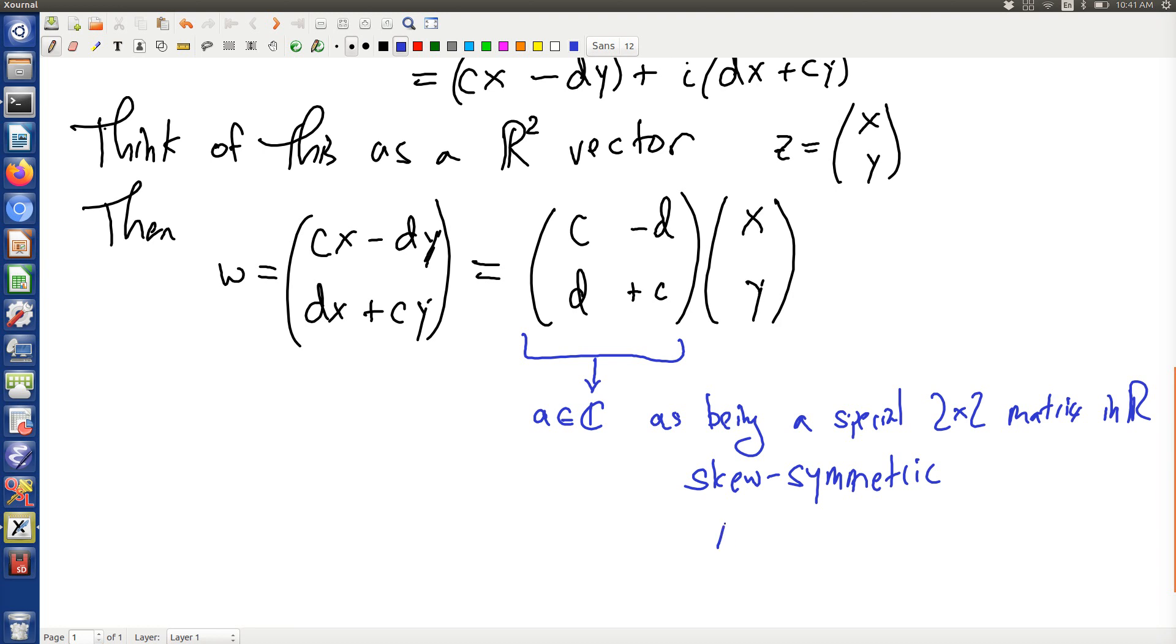Which is to say, it's not that A is equal to A transpose, but rather negative A is equal to A transpose. Why is that? Because that's the effect of this minus sign right here. That minus sign is that minus sign.